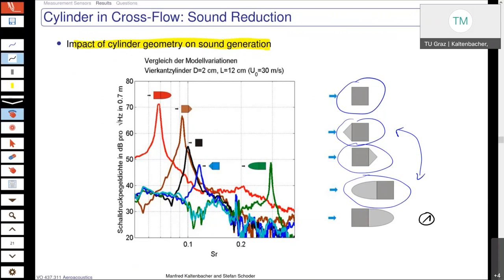Then the next one is number two, where we attached here this triangular structure downstream. We see that we also have a decrease in the shedding frequency compared to our standard square cylinder, and we have an increase in the amplitude. Number three is our standard configuration, and now we see we get here a nice reduction in the sound pressure level and the increase in the shedding frequency when we attach in front of the square cylinder this triangular structure.